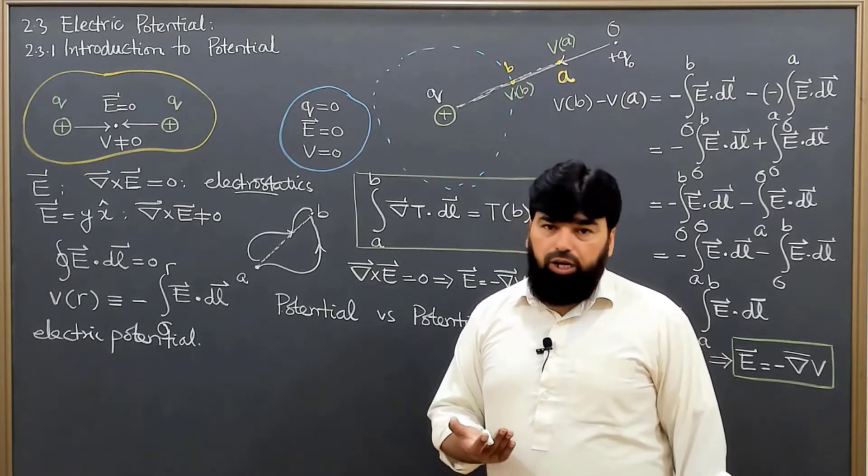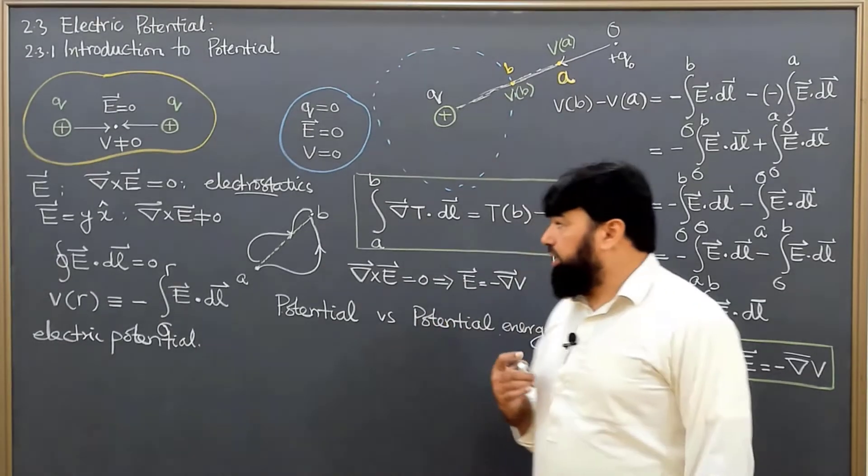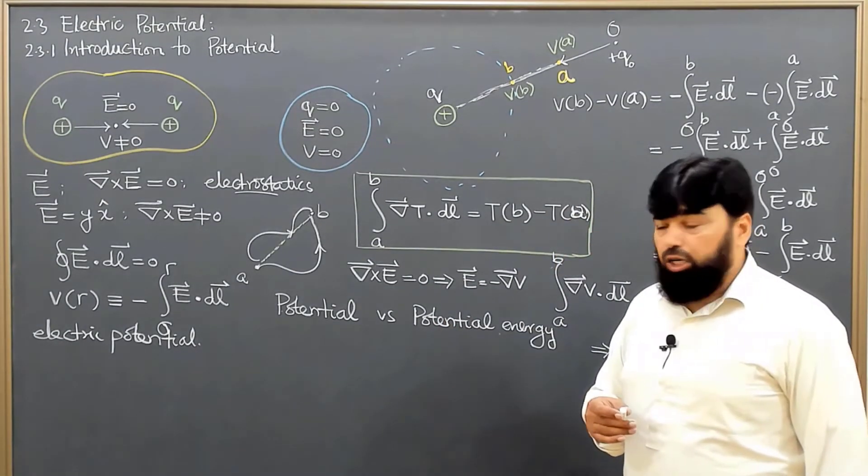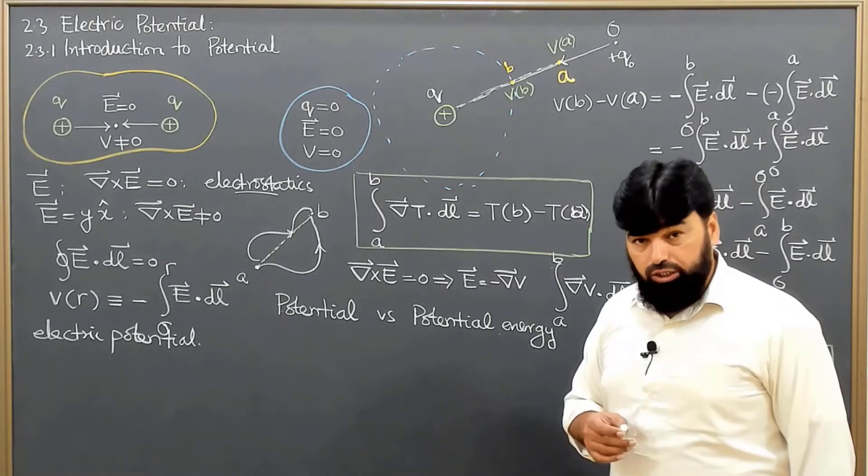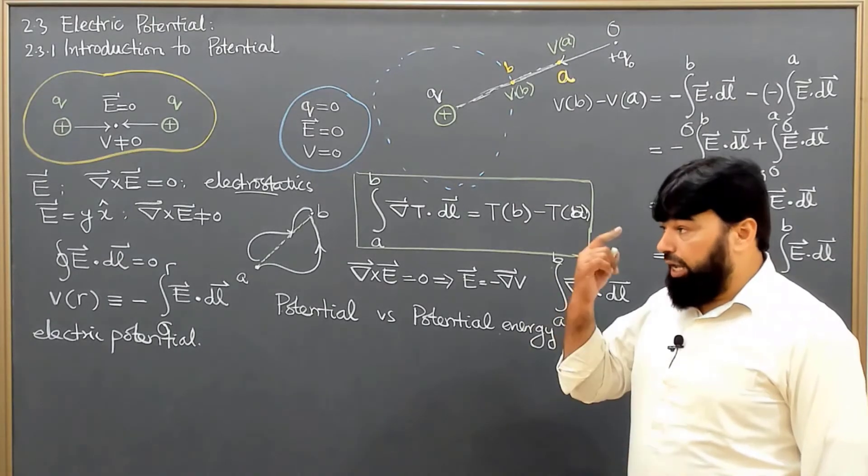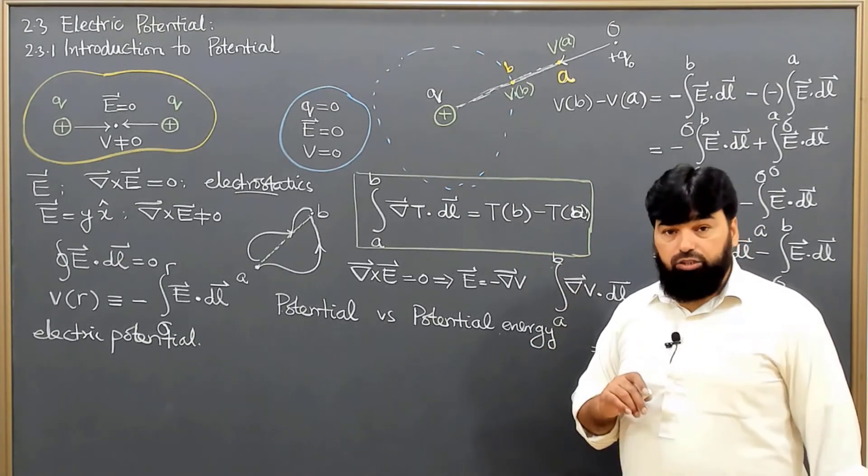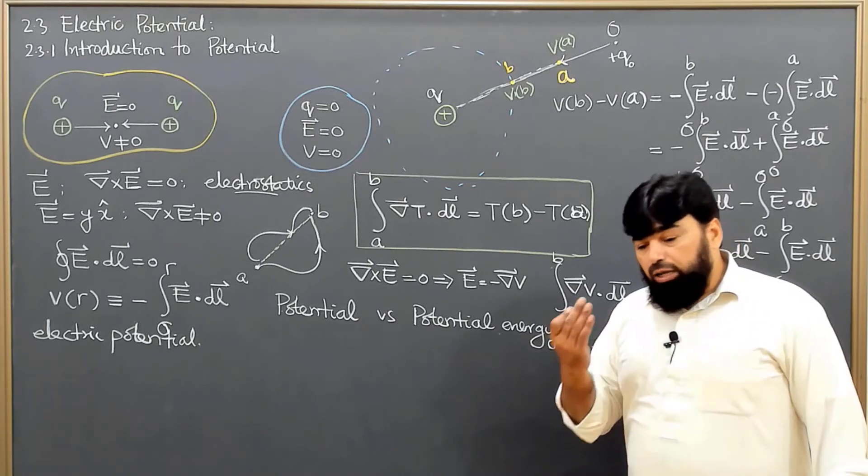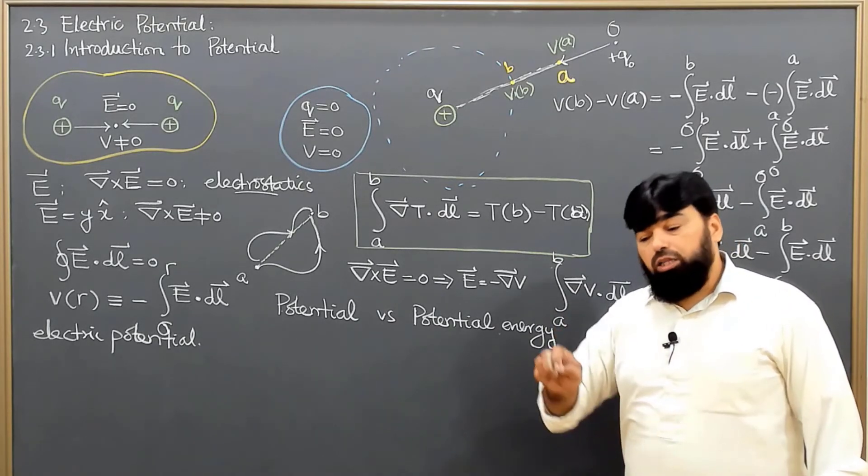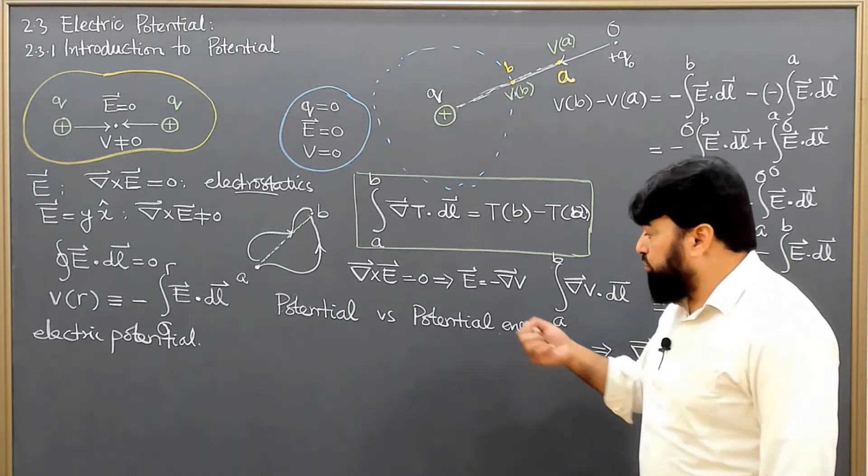Then I will see that there is zero electric field. The meter will be reading zero electric field and then I will conclude that there are no charges. But this conclusion will not be correct because I will have to keep in mind the vectorial nature of the electric field.